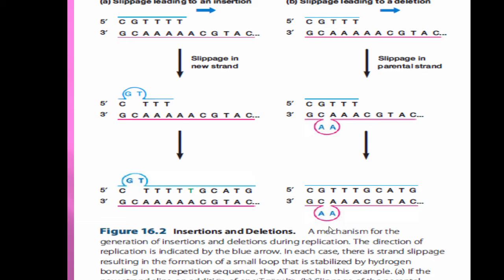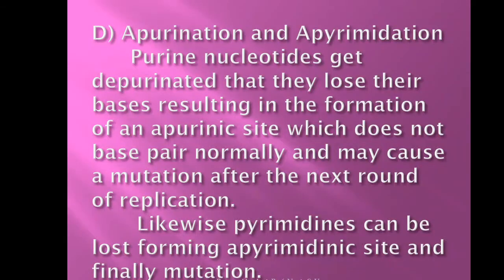This diagram shows insertions and deletions. Here is a double-stranded DNA molecule with the sequence cytosine-guanine-thymine-thymine-thymine-thymine. There is a slippage in the new strand — cytosine-guanine-thymine slips and results in the formation of a different DNA molecule where a new thymine nucleotide is inserted, which is called an insertion. Alternatively, when there is a slippage in the parental DNA molecule, it results in deletion. These are mutations called insertions or deletions.